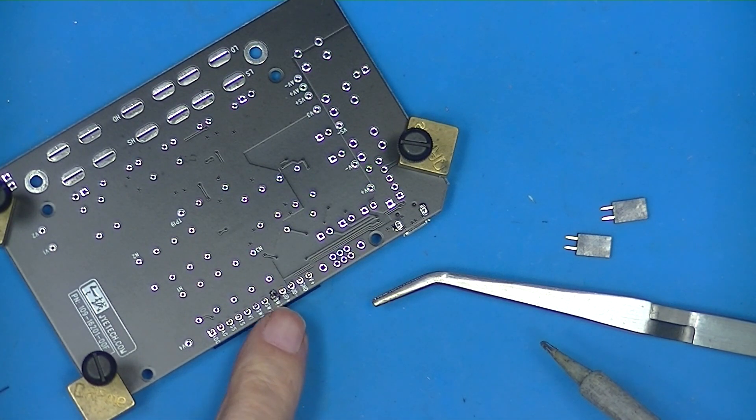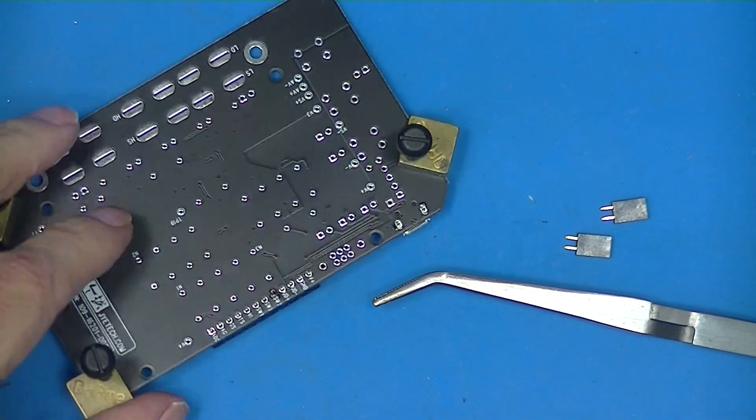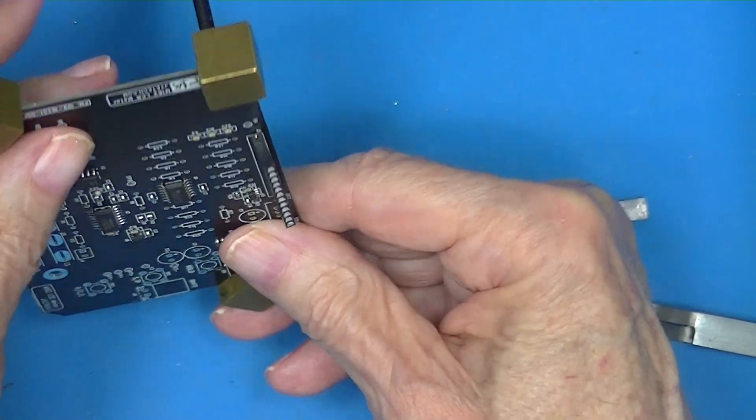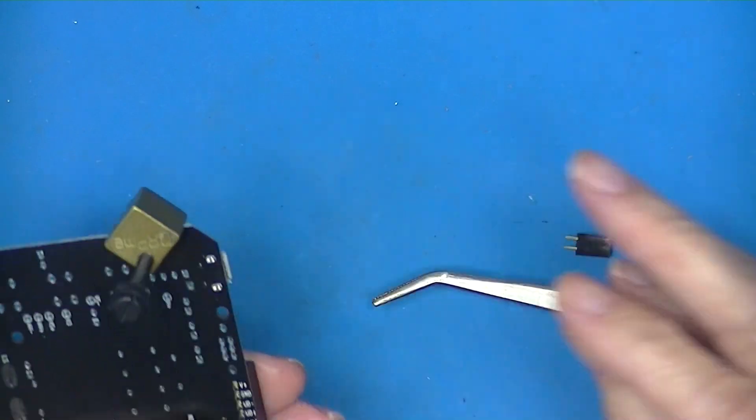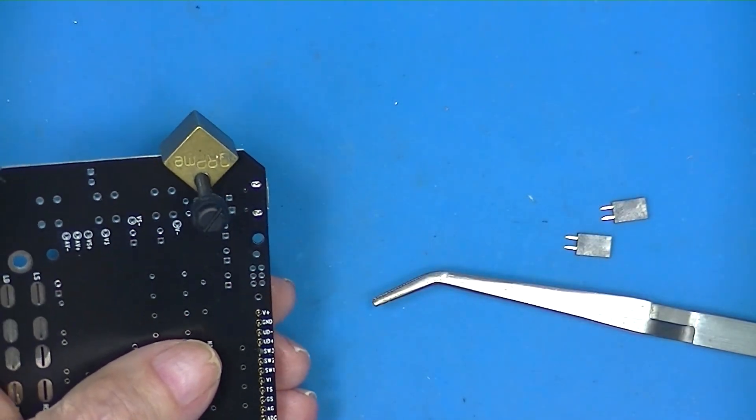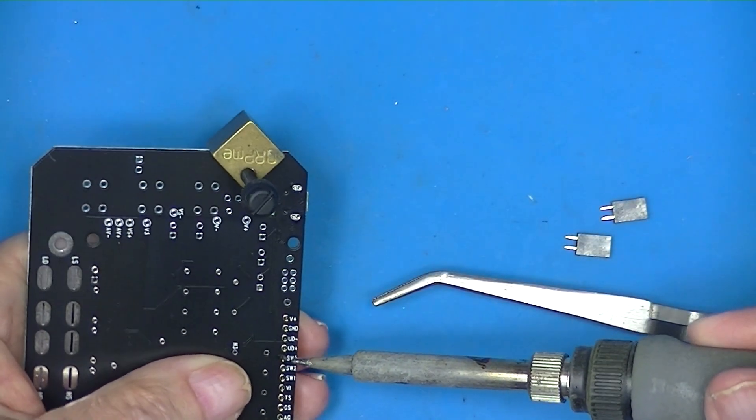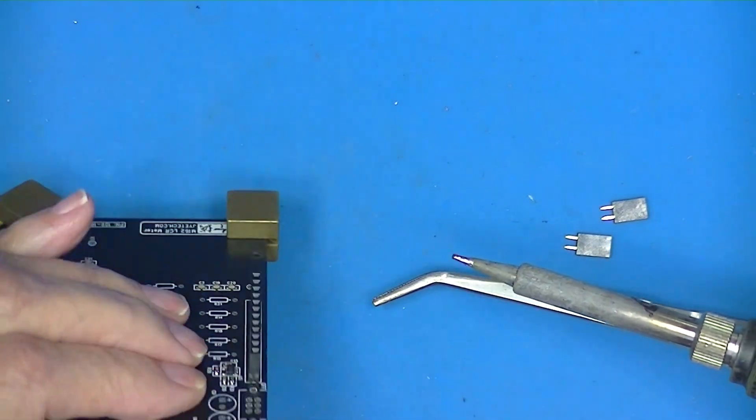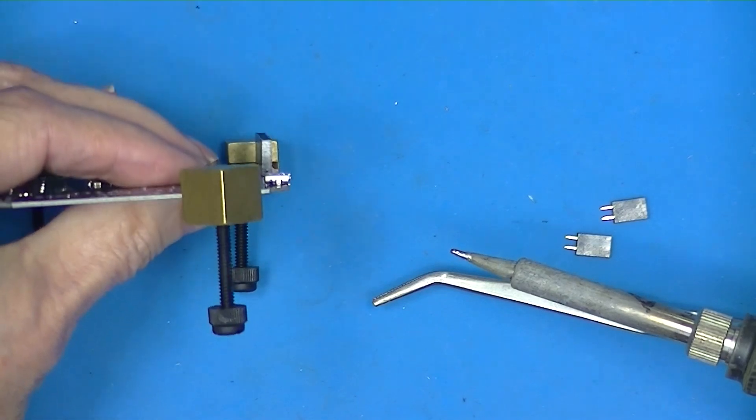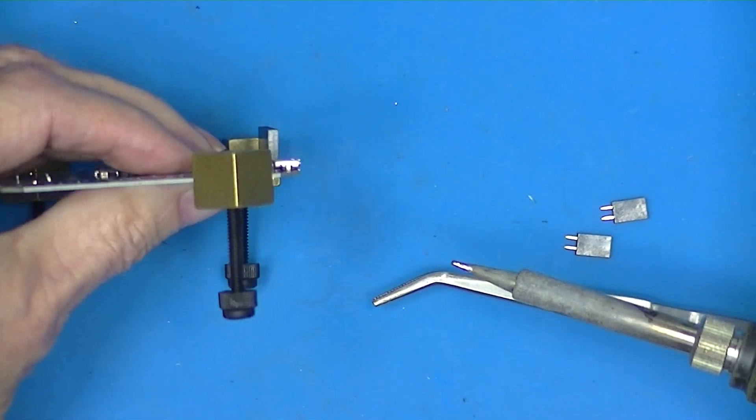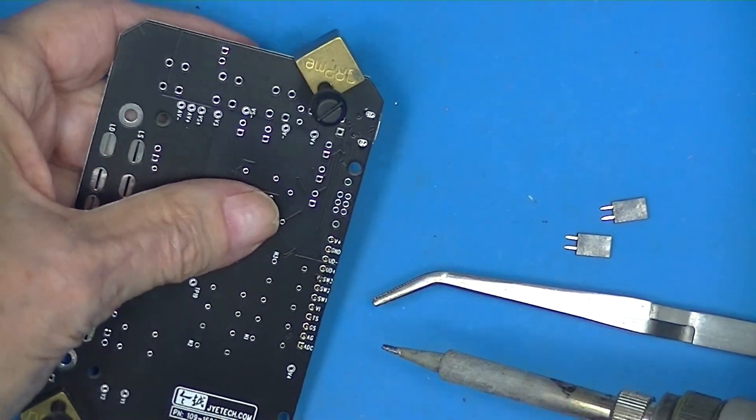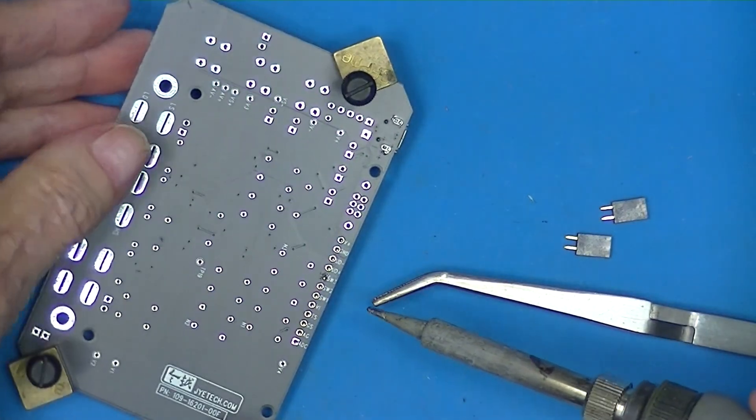I'm just going to solder one hole, and then look at this to see if it's straight and it's not. So that looks like it's at right angles to the board. If I had soldered more than one, I would have had a bigger problem straightening it.